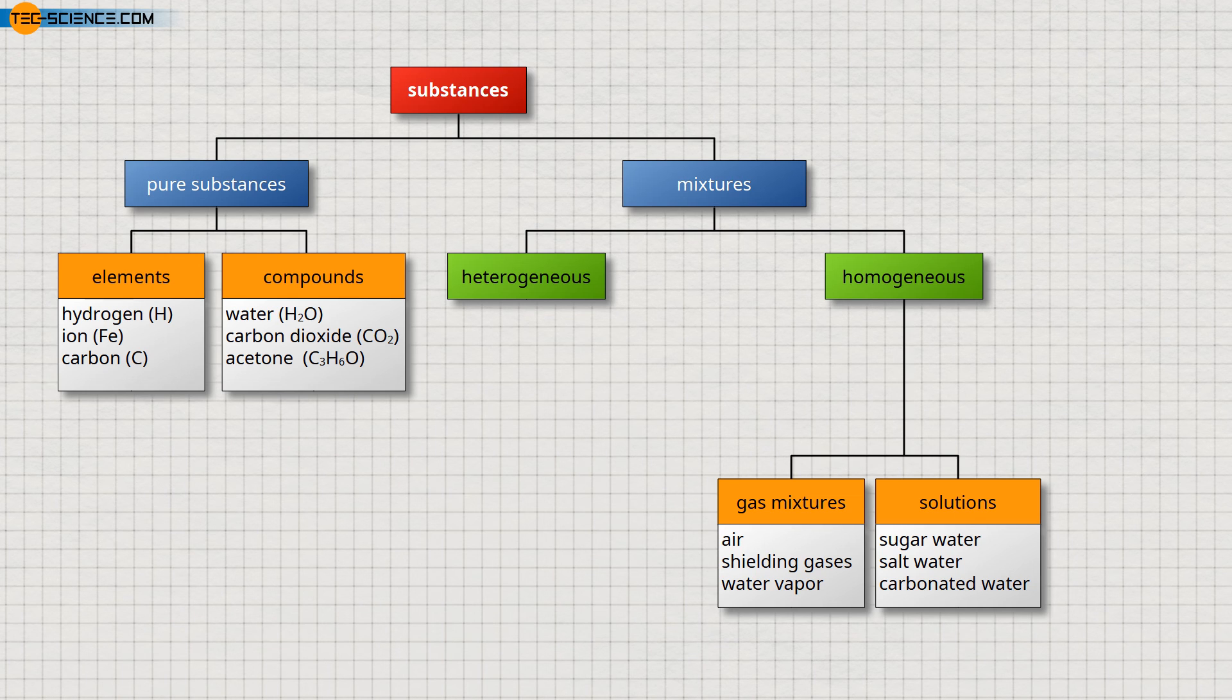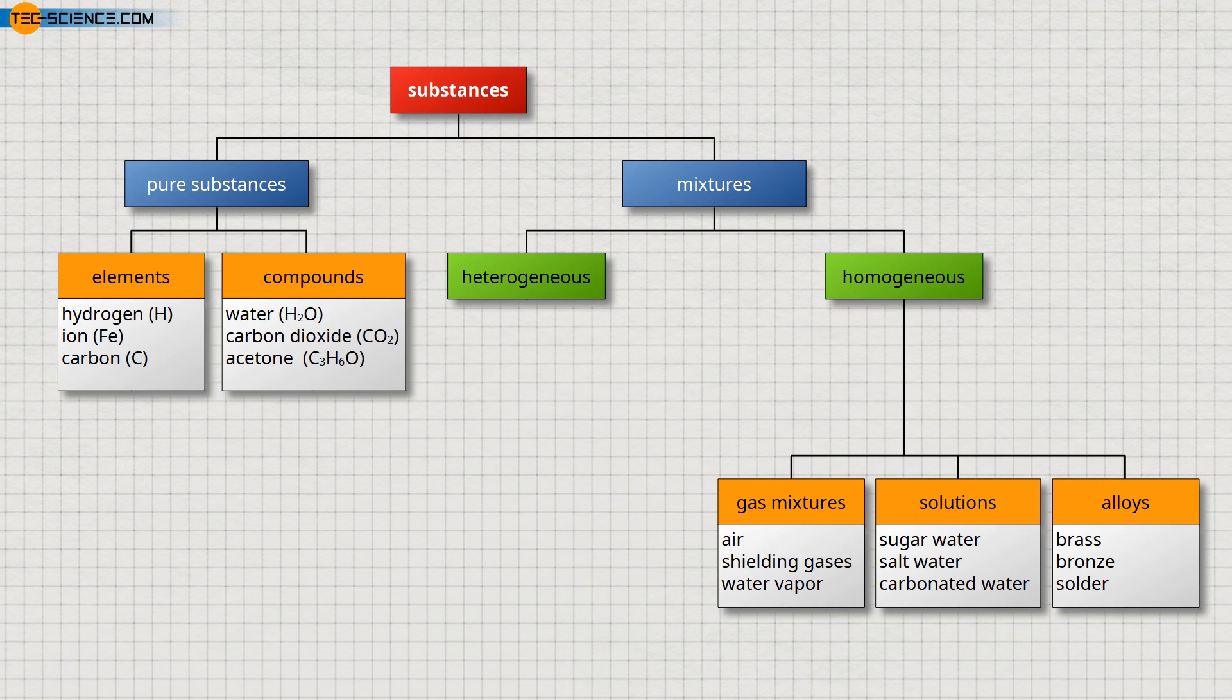Besides gases and liquids, solids can also form homogeneous mixtures. These include, for example, alloys such as copper-nickel alloys.